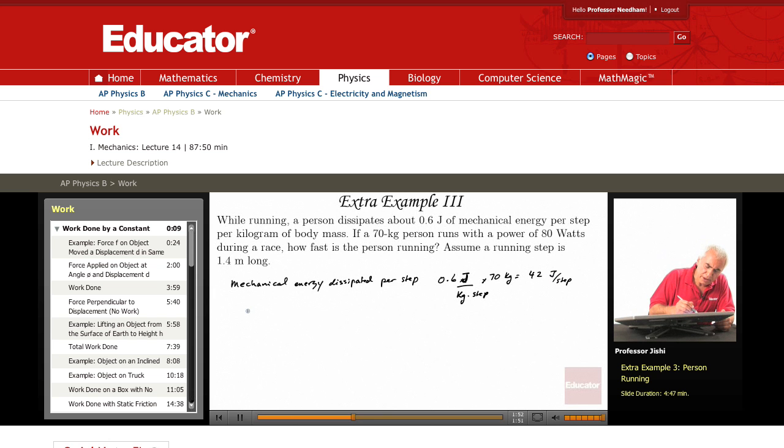Now, the power P is the work done - this is the work done by the person per step. So, the power is the work done divided by the time it takes to do the work.